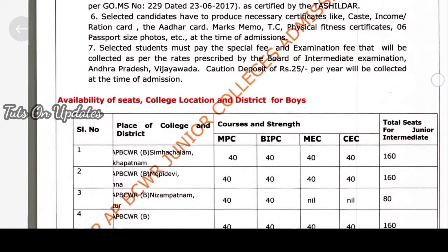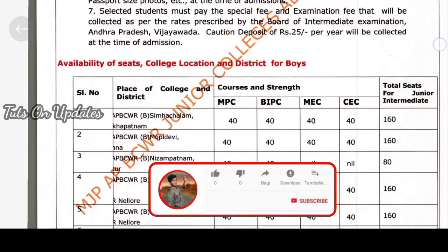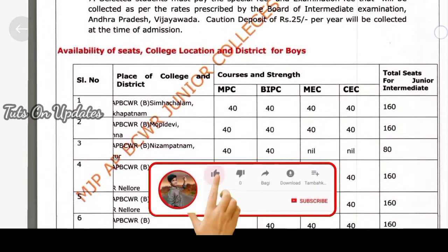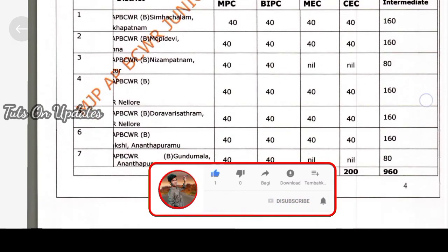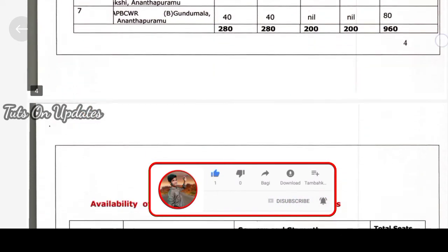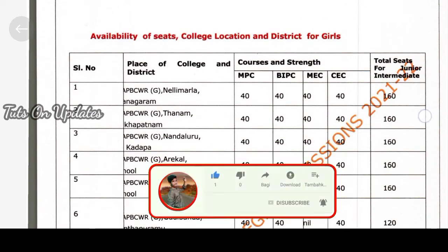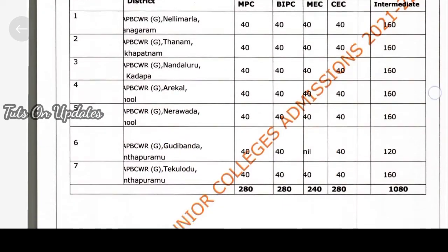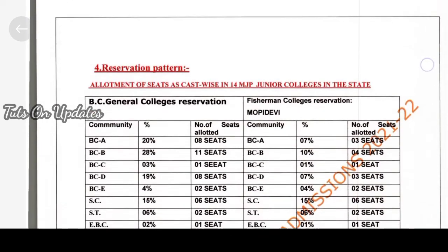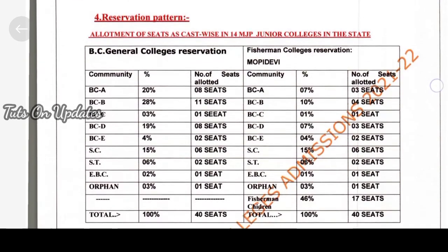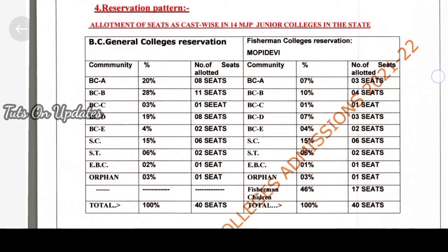If you don't get your group in your district, you can apply to another district. At the time of admission, students need to bring: income certificate, ration card, Aadhar card, marks memo, TC, physical fitness certificate, 6 passport size photos, exam fee, and sports fee. The total fee is approximately 800-900 rupees.